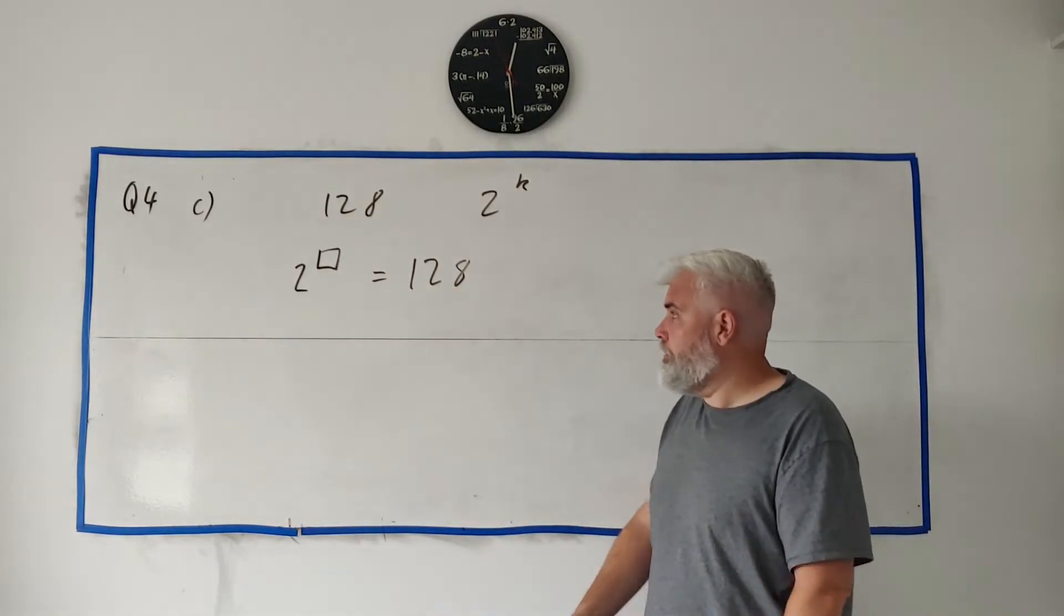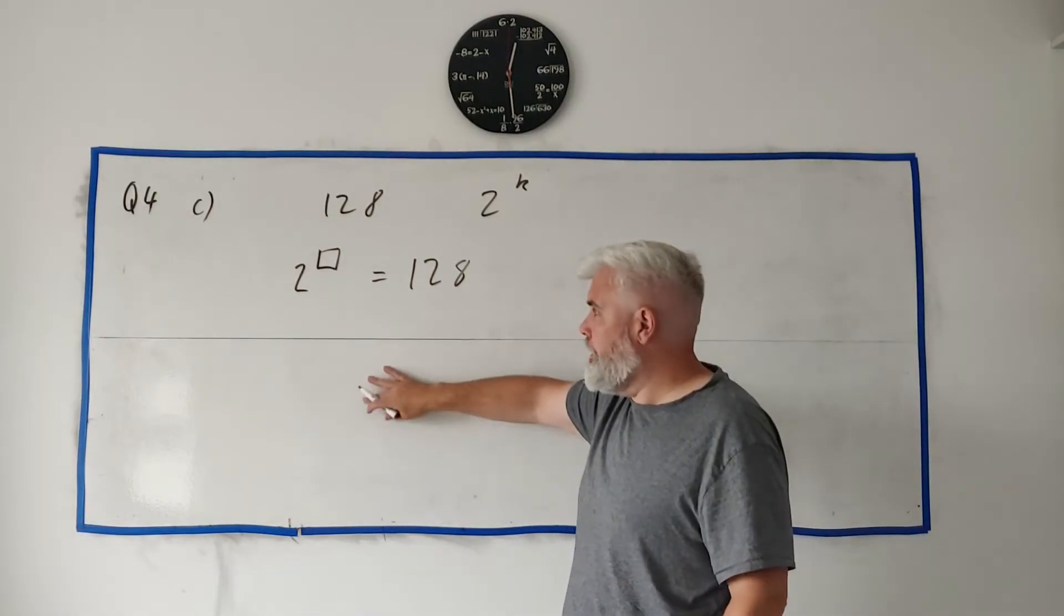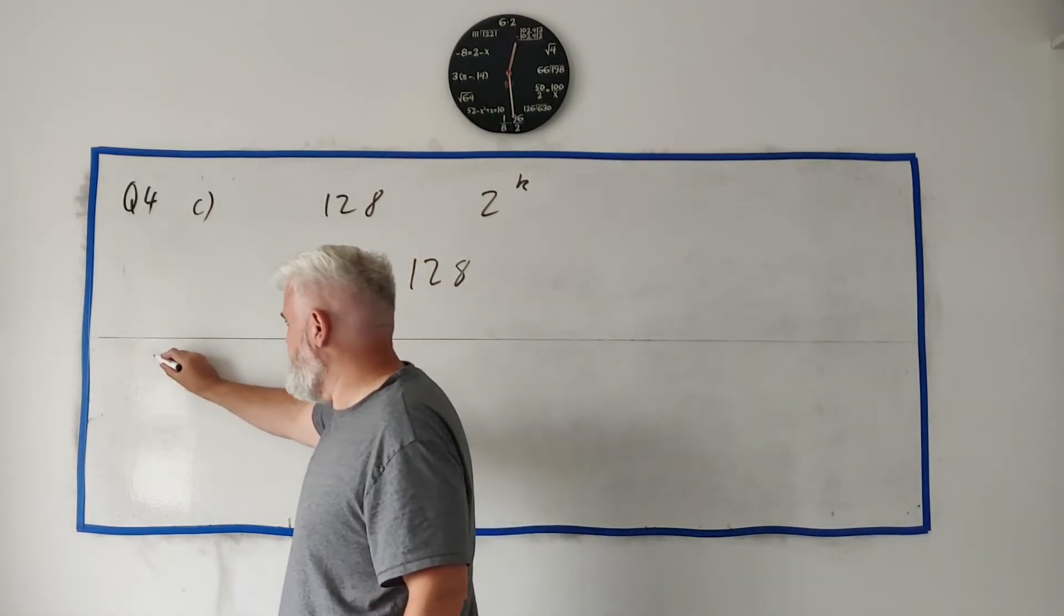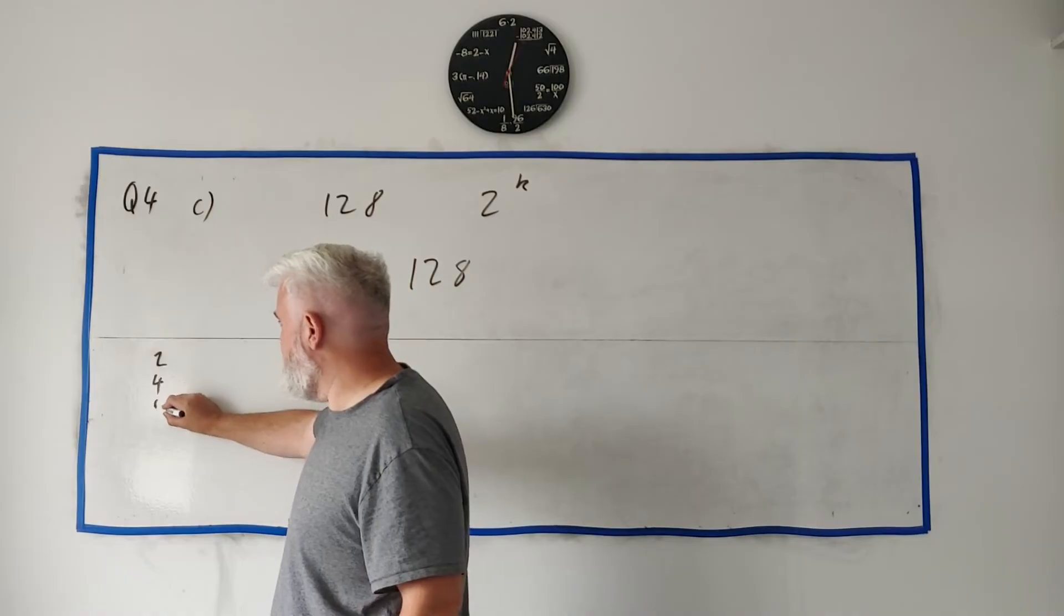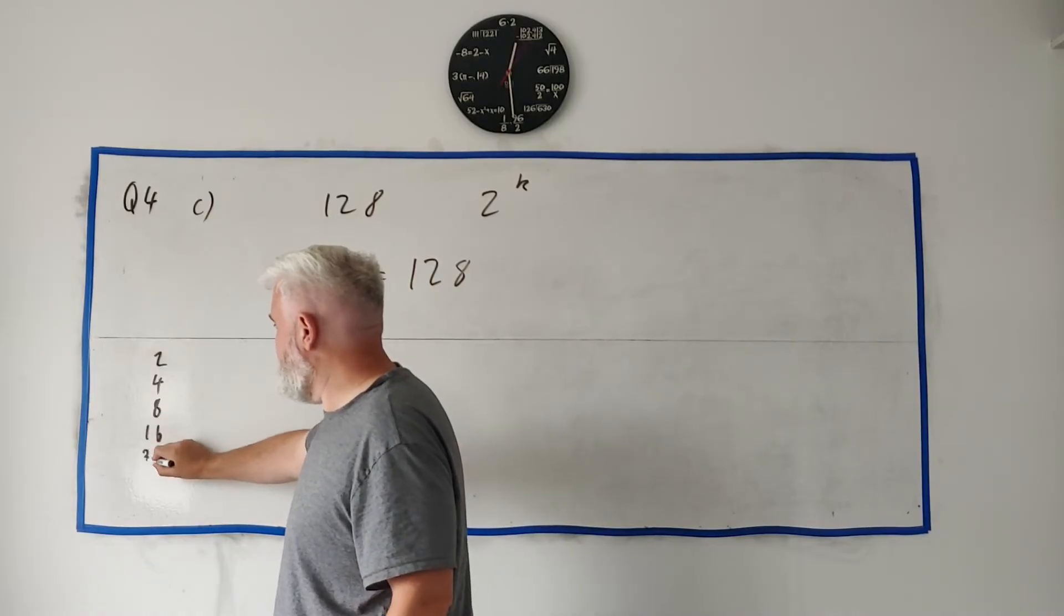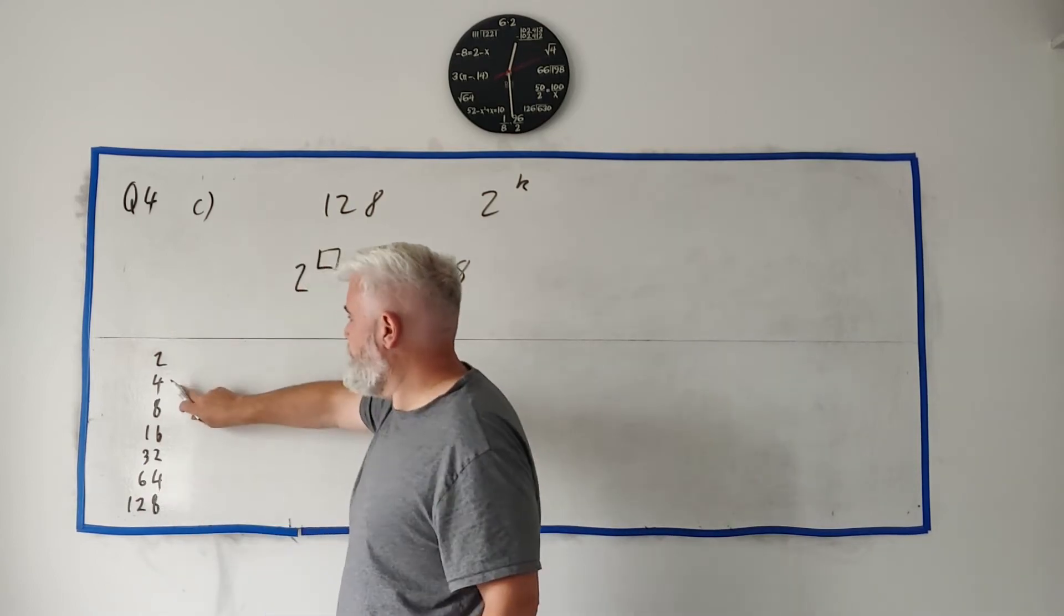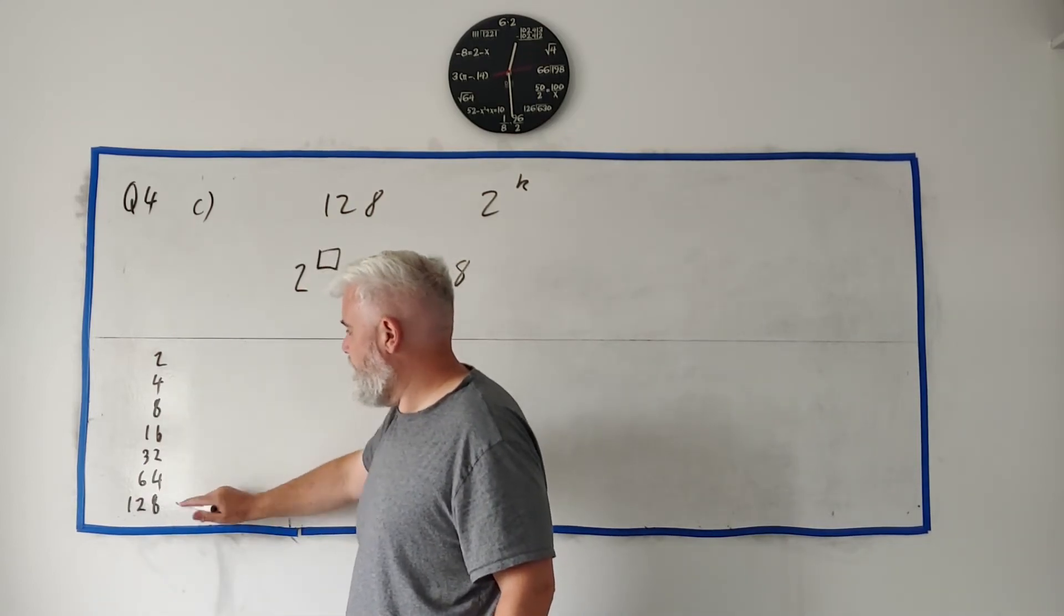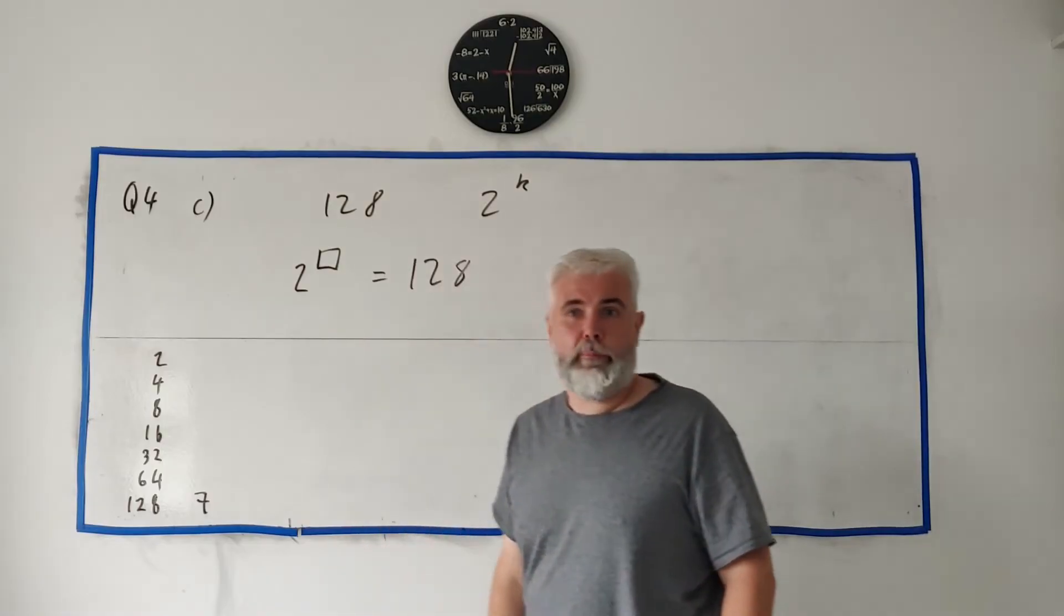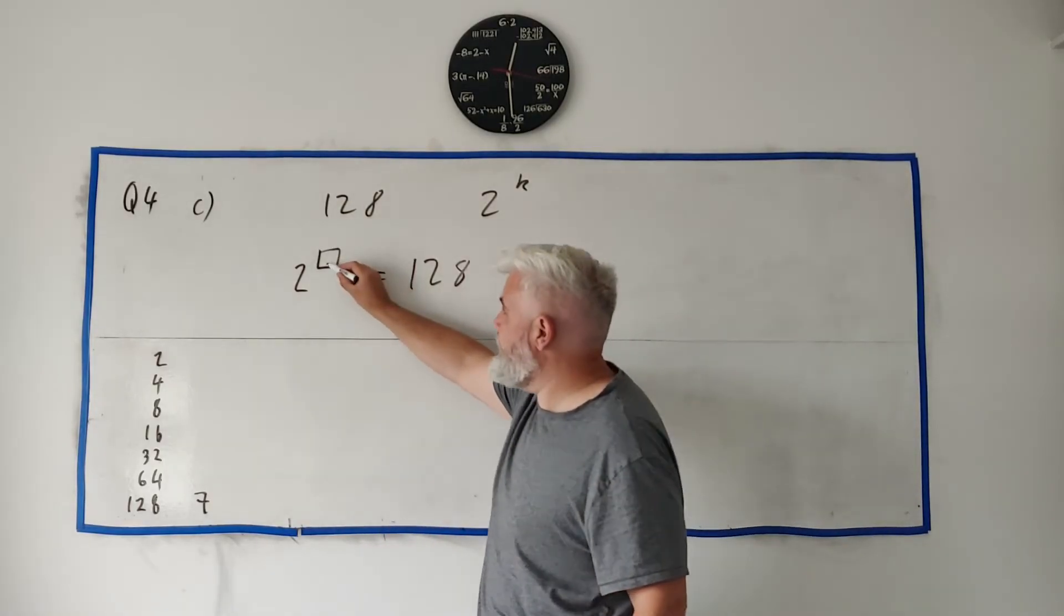So what number is it? You can just go ahead and use a calculator: 2 to the power of 1 is 2, it's 4, it's 8, 16, 32, 64, 128. So that's 1, 2, 3, 4, 5, 6, 7. A bit of trial and error will tell you that the answer here is 7.